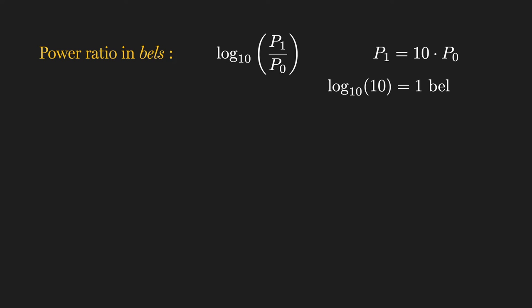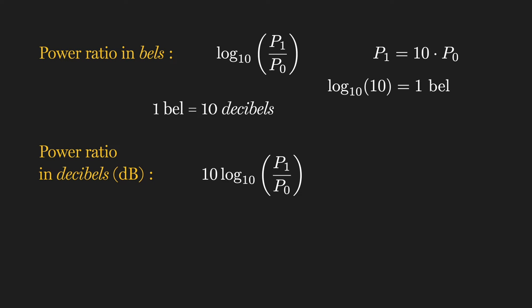A decibel is one-tenth of a bell, or 10 decibels per bell. So the comparison of two powers in decibels is 10 times log 10 of their ratio, providing a finer measurement of smaller differences between powers.